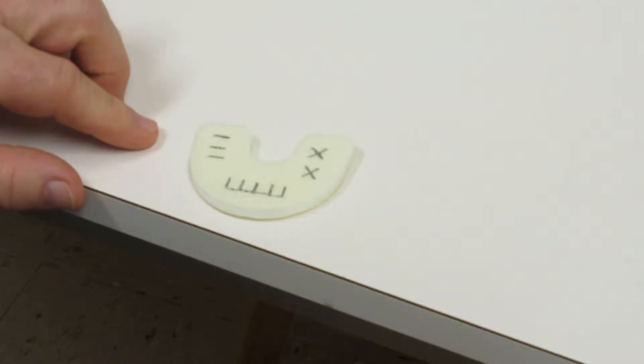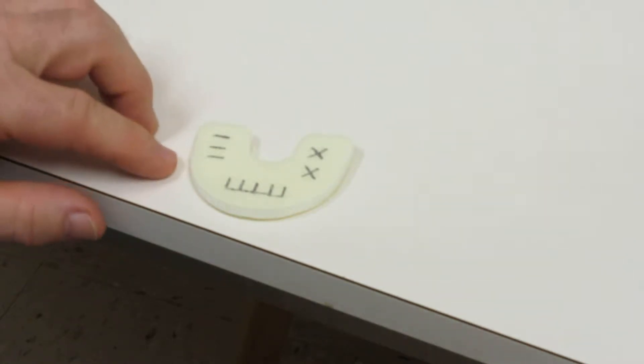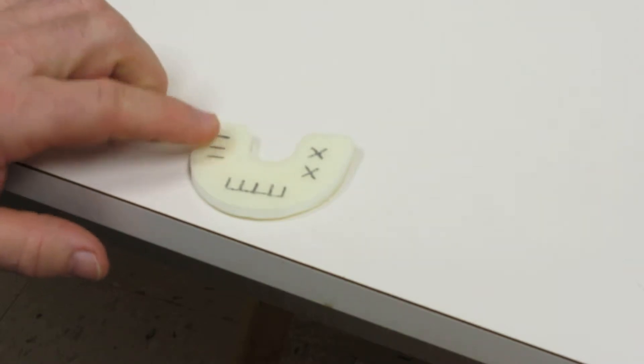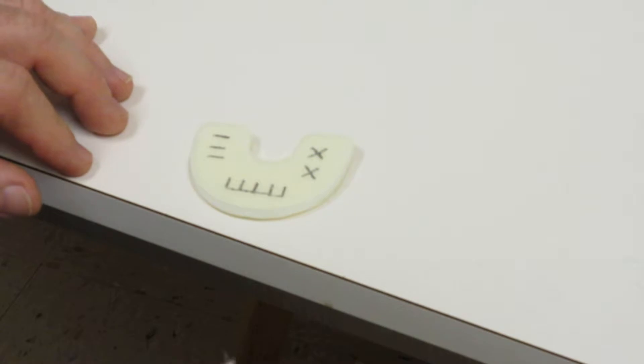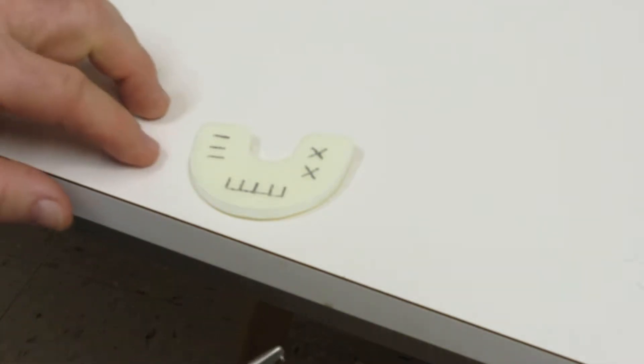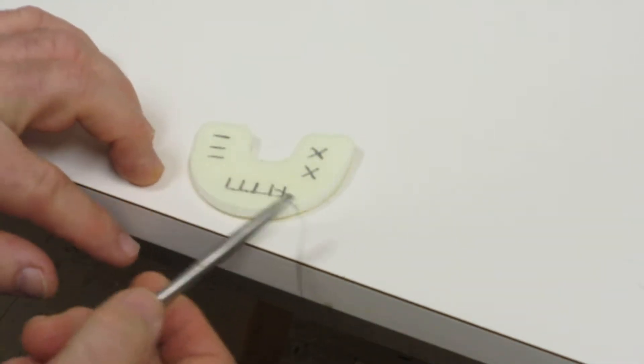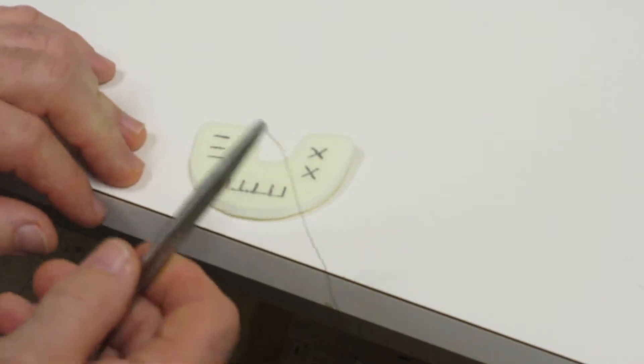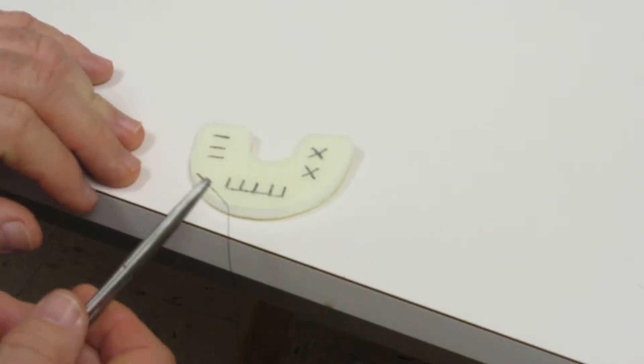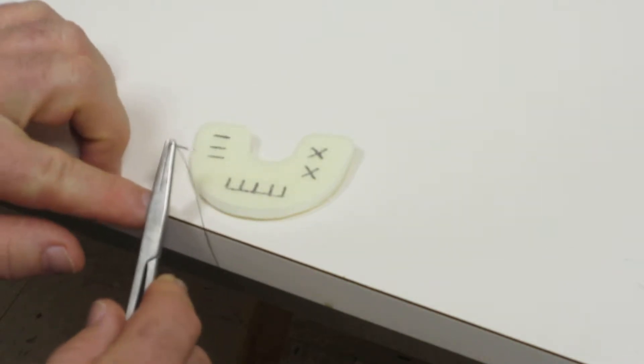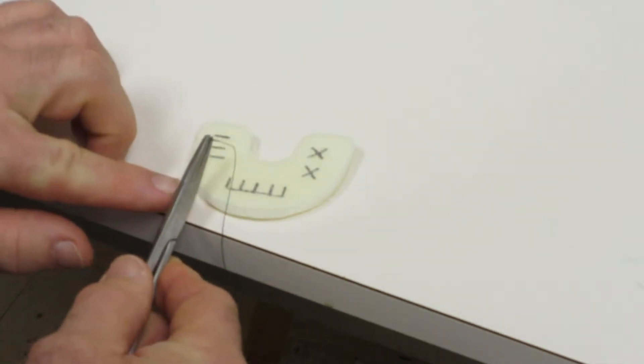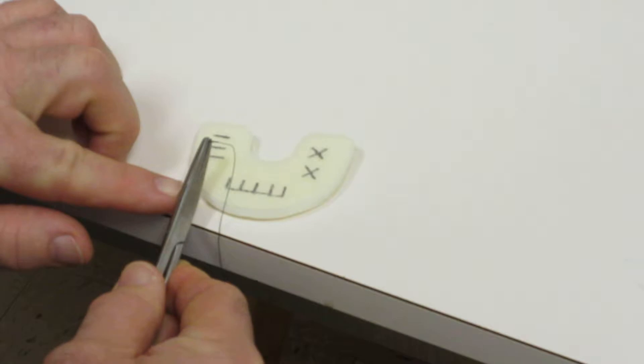Your go-to suture typically is going to be the interrupted, and you always go from the movable tissue, the tissue that you've reflected, the flap, the buccal tissue typically, and you'll go from the movable stuff to the fixed. So we'll start from the outside and we're going to come in.